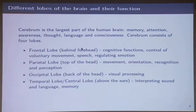The brain consists of the cerebrum, which is the largest part and most relevant for us. It is responsible for memory, attention, awareness, thought, language, and consciousness. It consists of four lobes primarily: the frontal lobe, parietal lobe, occipital lobe, and temporal lobe. The frontal lobe is just behind your forehead, responsible for cognitive functions, control of voluntary movement, speech, and regulating emotion. The parietal lobe handles movement, orientation, recognition, and perception.